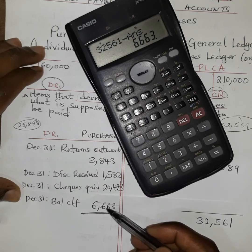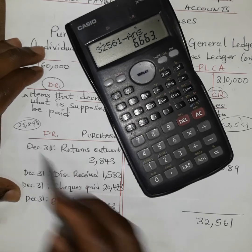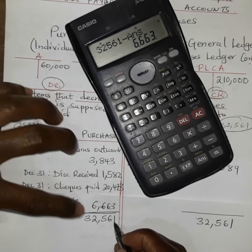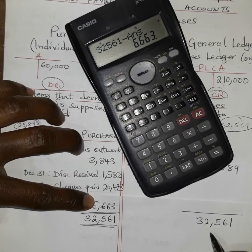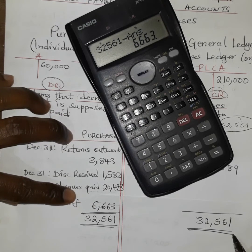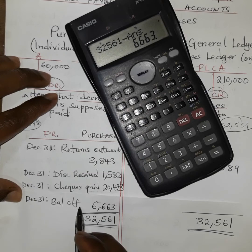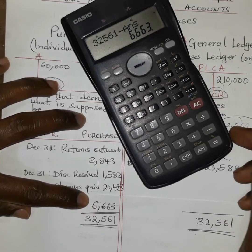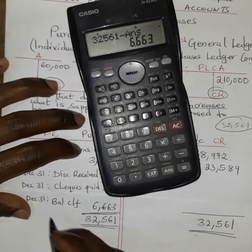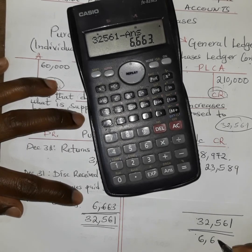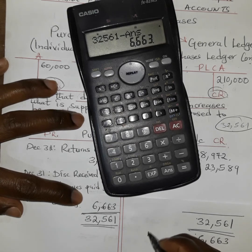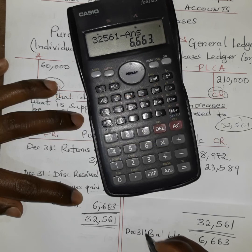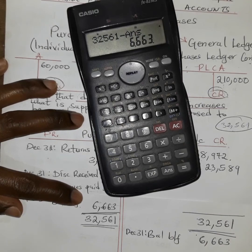After double underlining, because this balance was carried forward, we bring it below on the side which had the greater total at the start. We write six thousand six hundred and sixty-three and give it the name balance brought forward as at December 31st. Please don't forget to subscribe if you find this helpful.